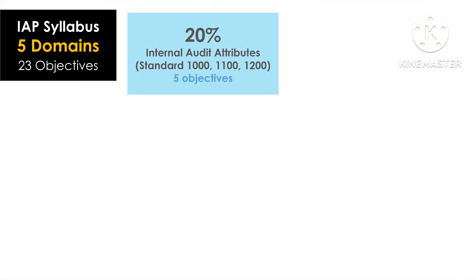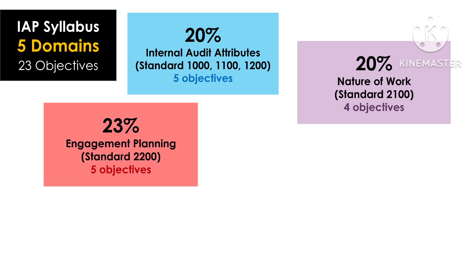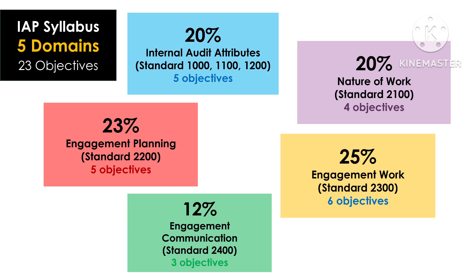The IAP syllabus has five domains and 23 objectives. First is Internal Audit Attributes, covering standards 1000, 1100, and 1200, with five objectives — 20% of the syllabus. Second is Nature of Work, covering standard 2100, with four objectives — also 20%. Third is Engagement Planning, standard 2200, five objectives — 23%. Fourth is Engagement Work, standard 2300, six objectives — 25%. Fifth is Engagement Communication, standard 2400, three objectives — 12%.